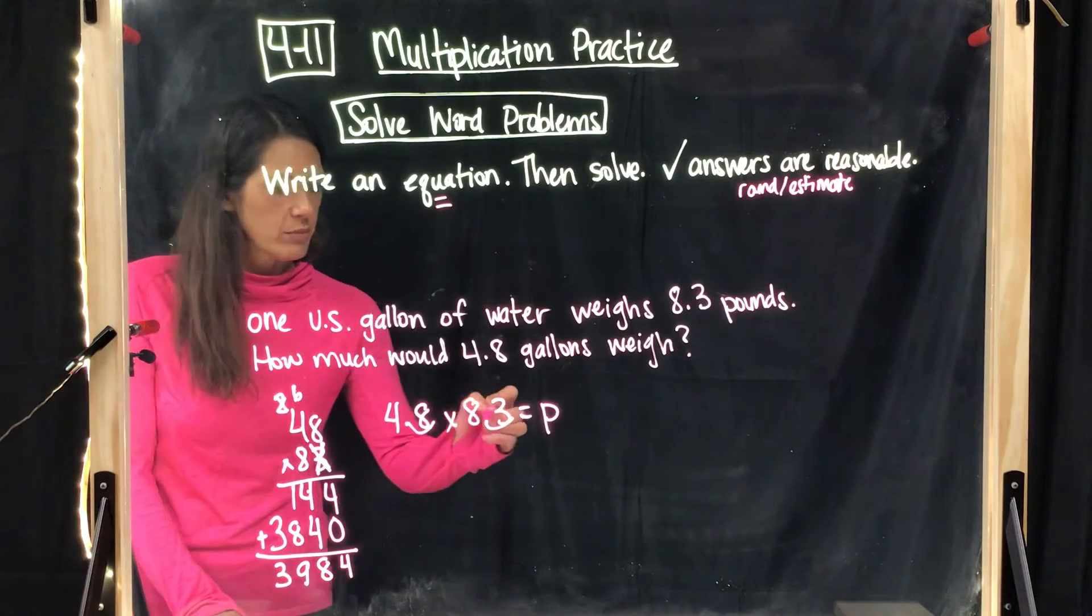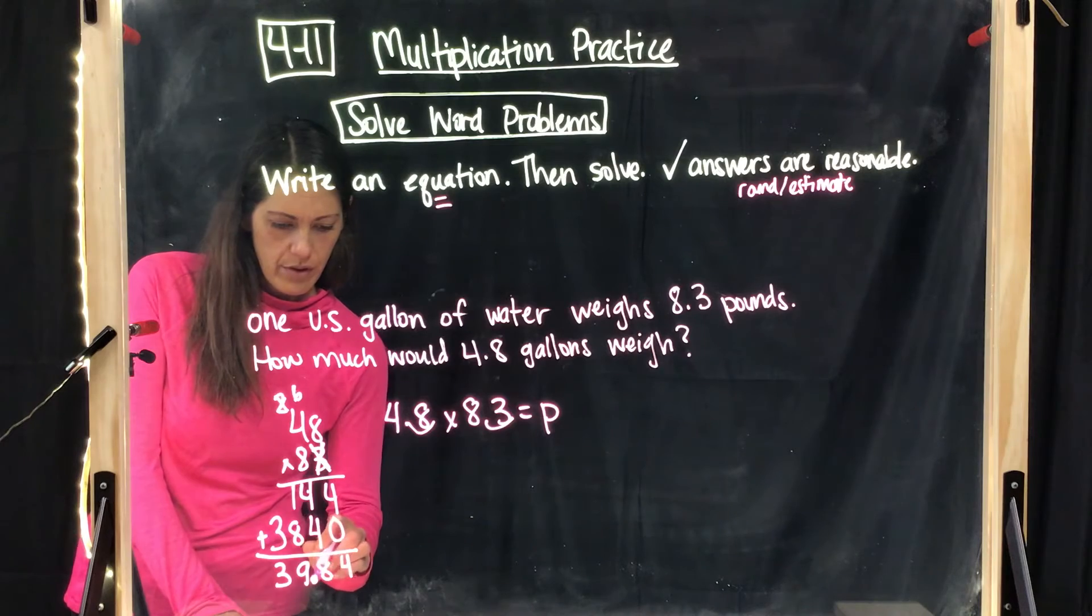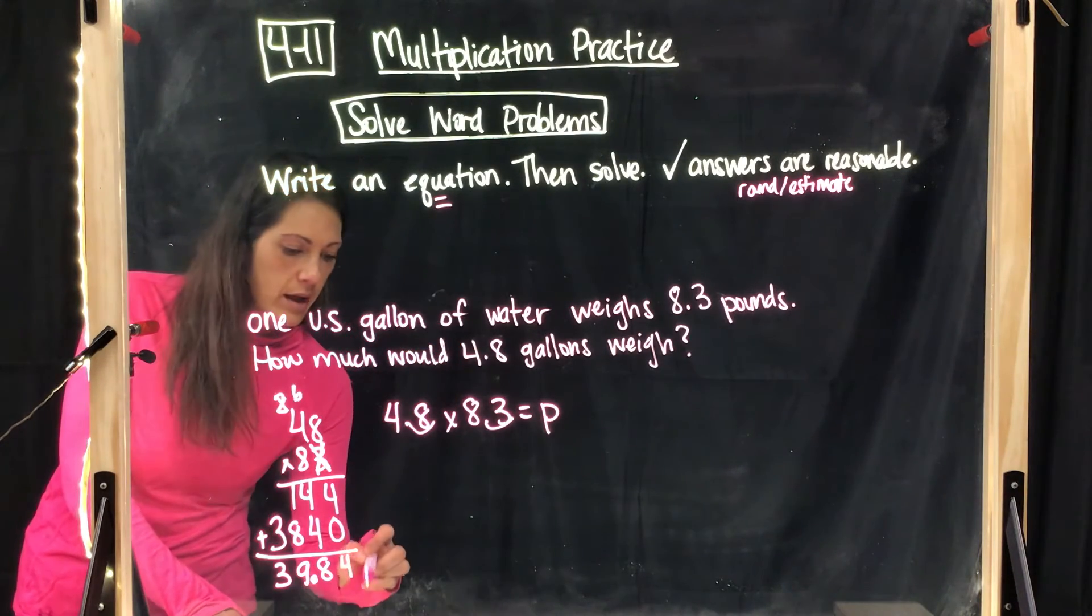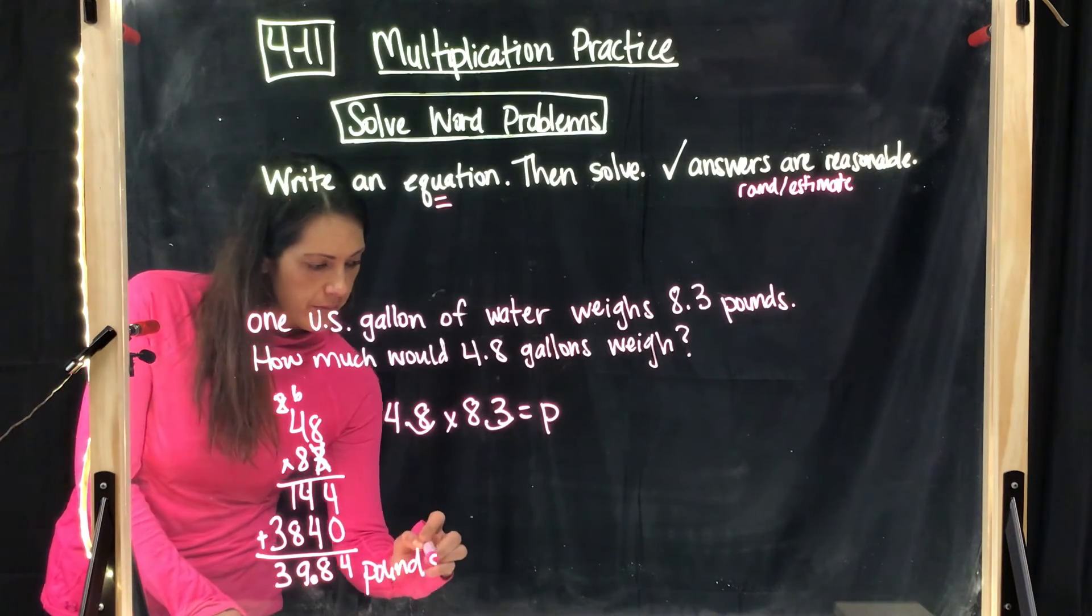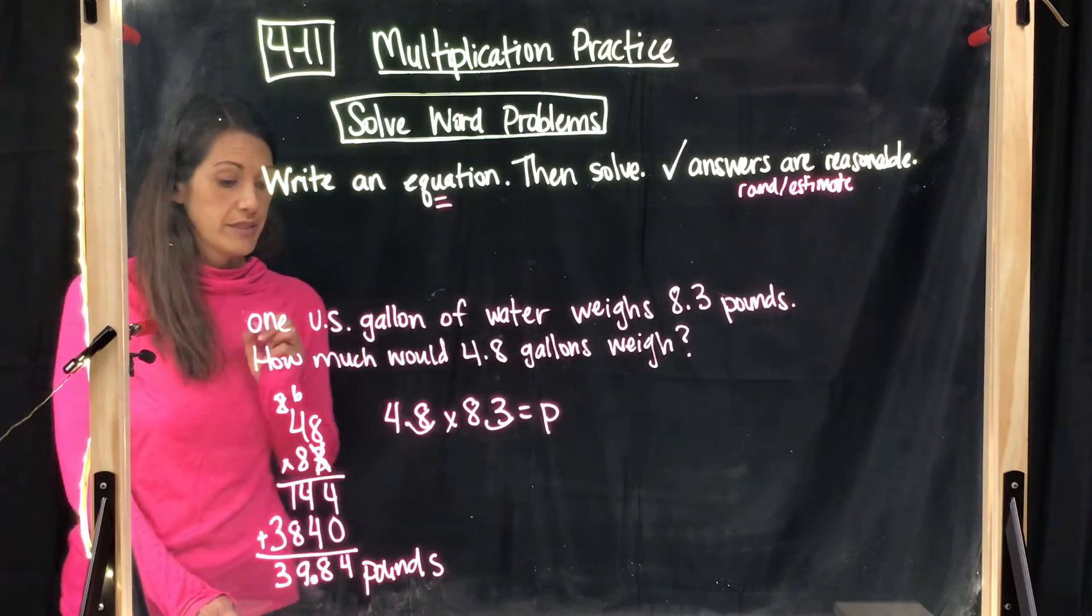I had two decimal places to get the decimals out. So I'm going to move two back in. One, two. So it looks like my answer would be 39.84 pounds.